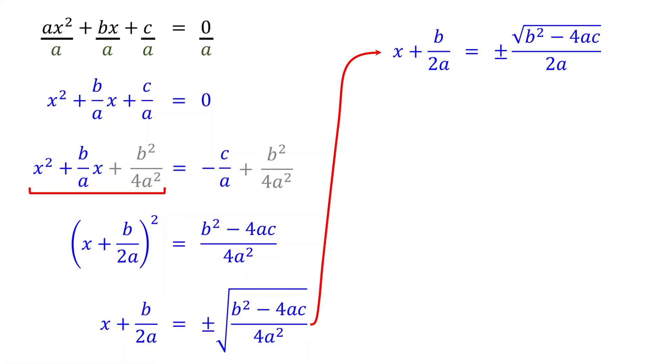Finally, solve for x by subtracting b over 2a from both sides. This is equivalent to moving it to the right side. Since it is positive on the left side, it becomes negative on the right side.